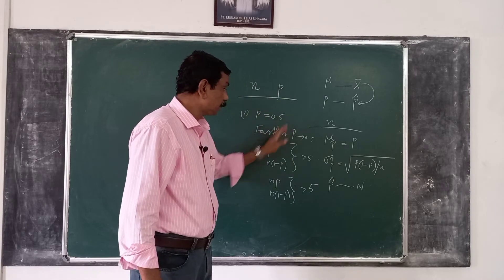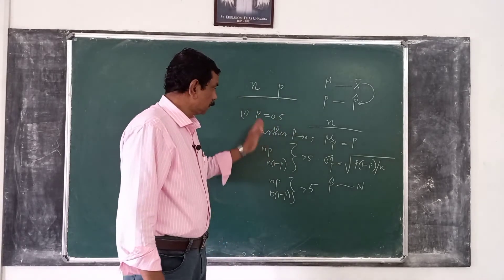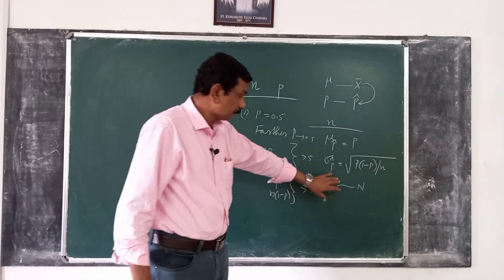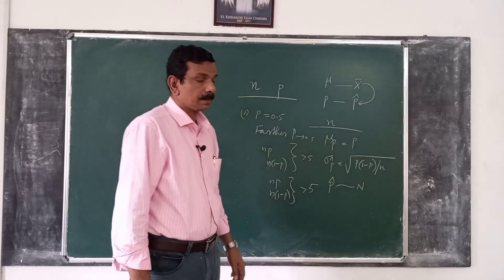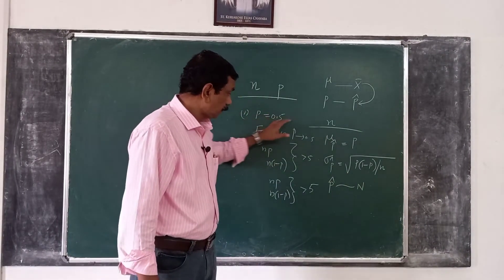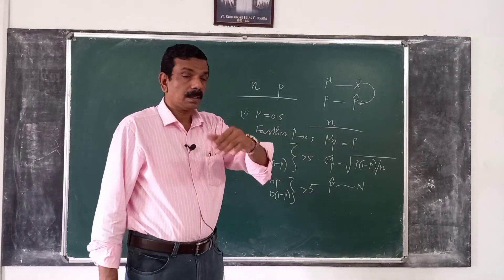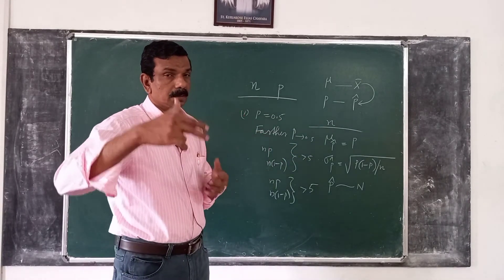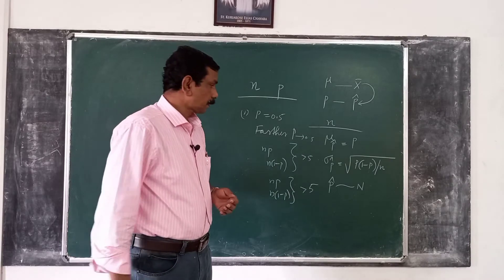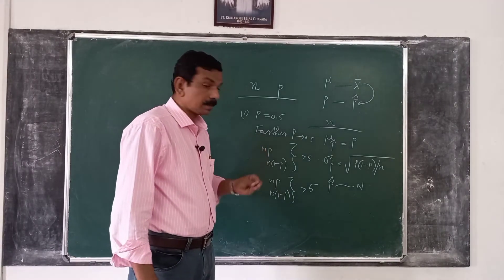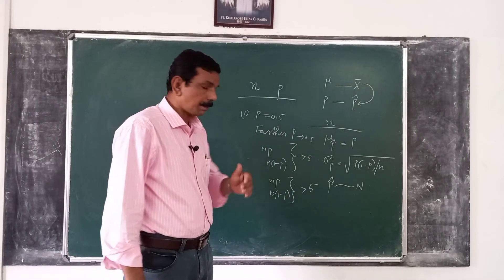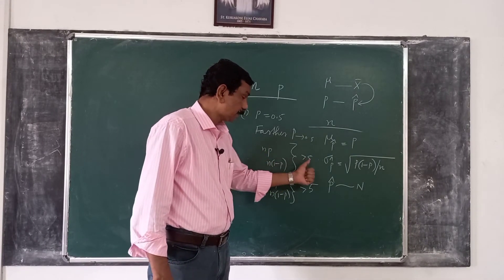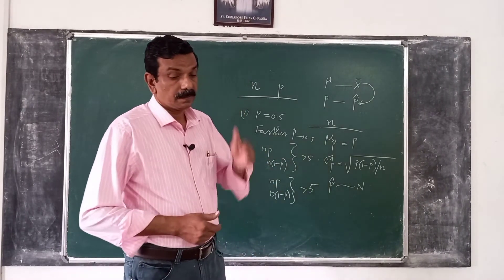If p is close to 0.5, then even for moderate n, p-hat is approximately normal. If p is farther away from 0.5, then a large sample size is required for this approximation to be accurate. As a rule of thumb, the approximation is accurate when n times p and n times (1 minus p) are both greater than 5.